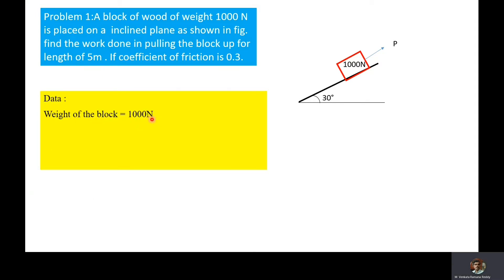Weight of the block: 1000 newtons. Displacement s is equal to 5 meters. Coefficient of friction μ is equal to 0.3. Here we have to find the work done in pulling the block up for a distance of 5 meters.